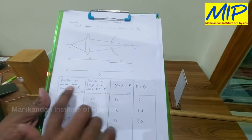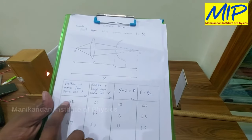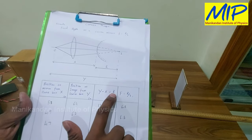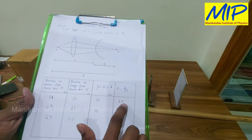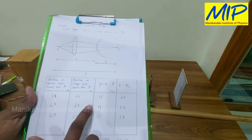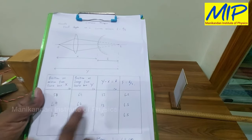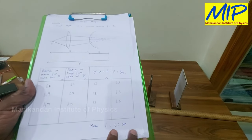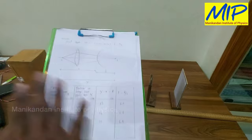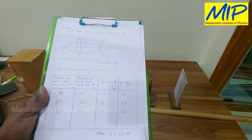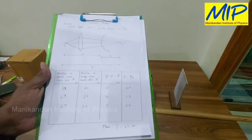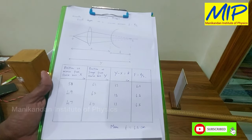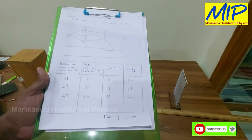So y minus x is 64 minus 51 equals 13 — that 13 is my radius of curvature of the given convex mirror. So f is equal to r by 2, giving 6.5 centimeters. Similarly, calculating for all observations, the average value of the focal length of the given convex mirror is 6.5 centimeters. This is how we are able to find the focal length of the given convex mirror. If you like this video, share it with your friends and subscribe to our channel to get regular updates. Thanks for watching.